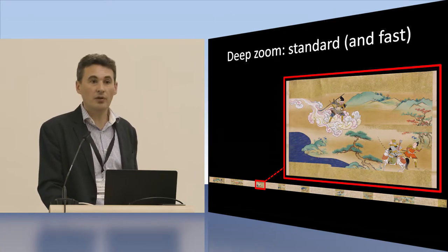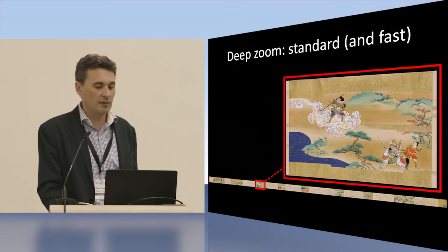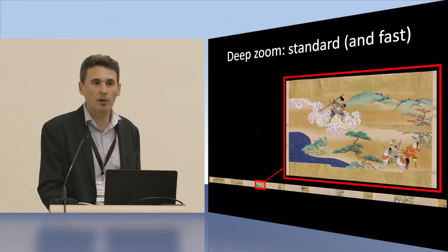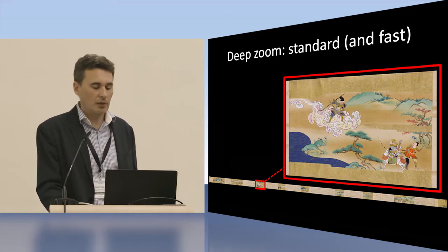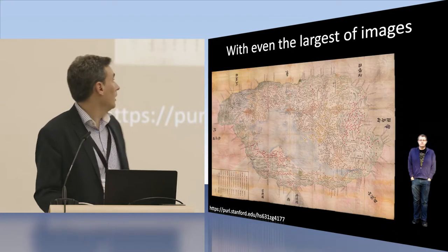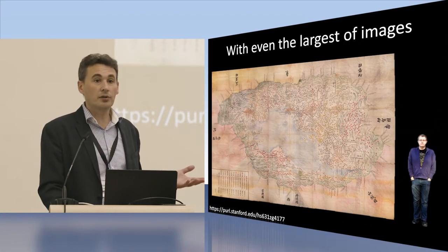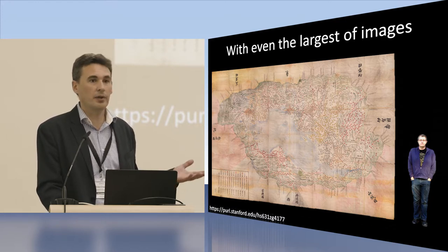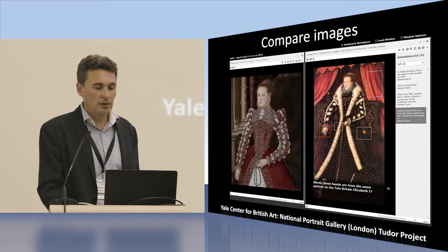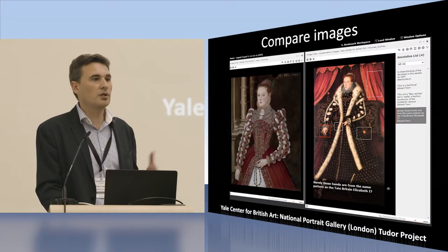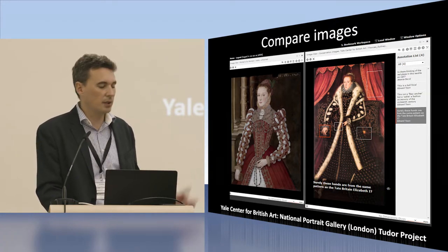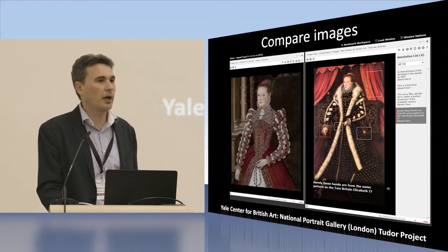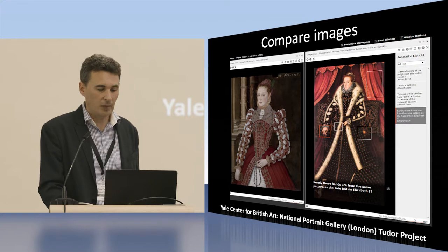At the time, deep zoom was technically hard — it's no longer as hard, in part because of advances IIIF has made. A great early example is from Princeton University Libraries, an early implementer of OpenSeaDragon. We also had very large images to deliver — this is a gigapixel image, now standard technology in our repository. We wanted to compare images from the same site and from different sites, like this example from the Yale Center for British Art, looking at the origin of different types of portraiture.